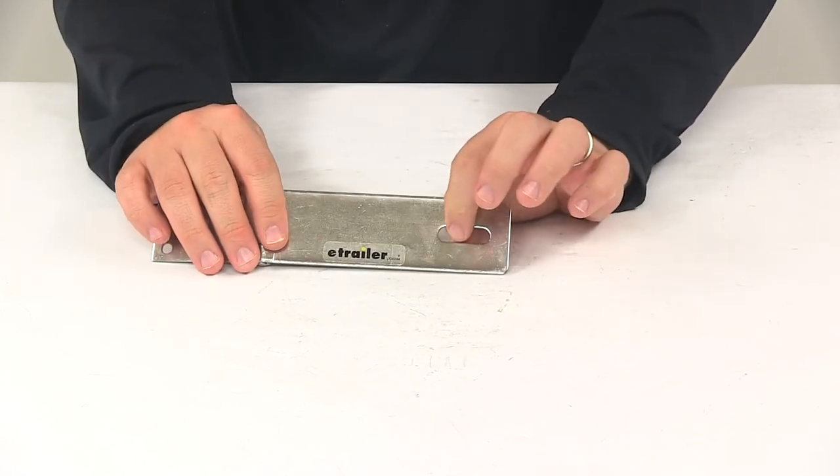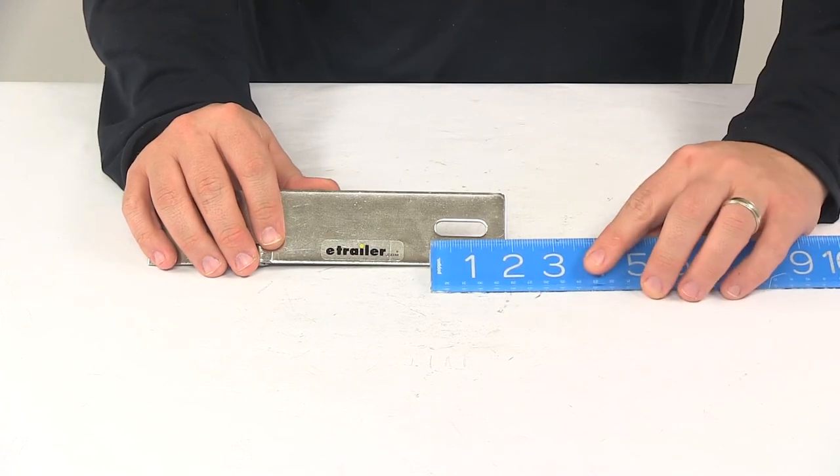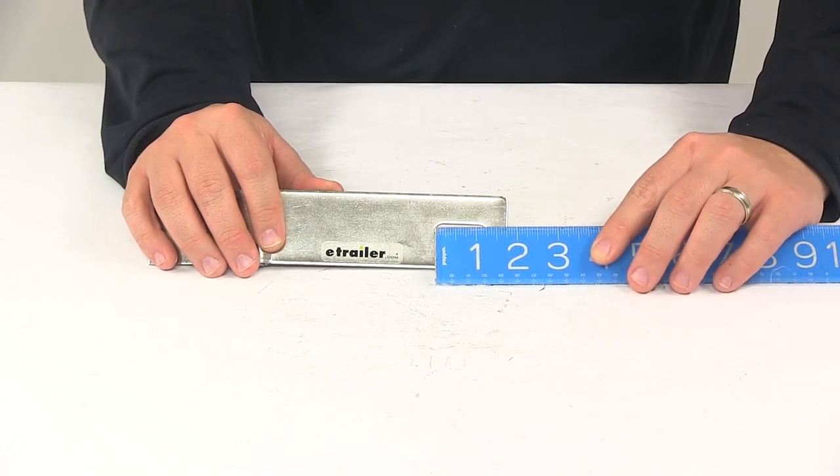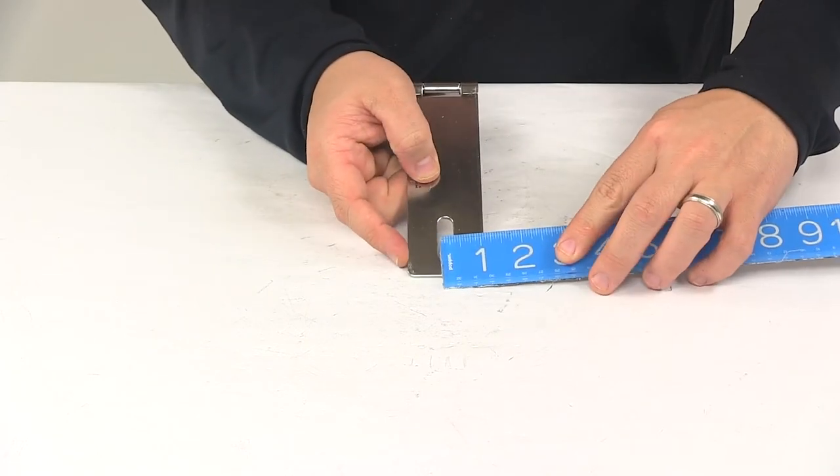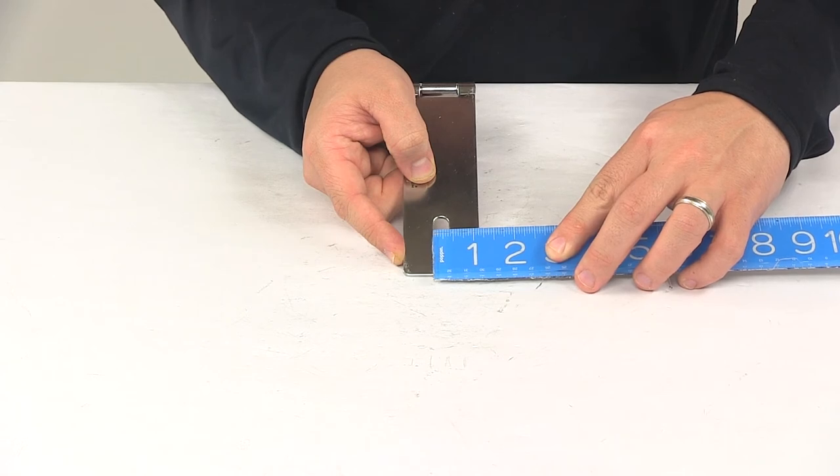The elongated hole right here, this would allow the staple to come through. That's going to give us a measurement of an inch and a quarter by three-eighths of an inch wide.